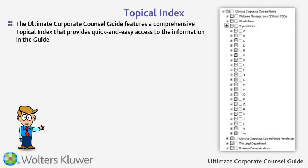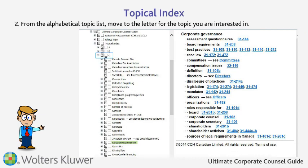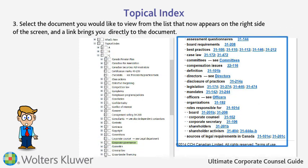The Ultimate Corporate Counsel Guide features a comprehensive topical index that provides quick and easy access to information in the guide. To access information via the topical index, click the plus sign to the left of the topical index. From the alphabetical topical list, move to the letter for the topic you are interested in. Select a document from the list that appears on the right side of the screen, and a link brings you directly to the document.